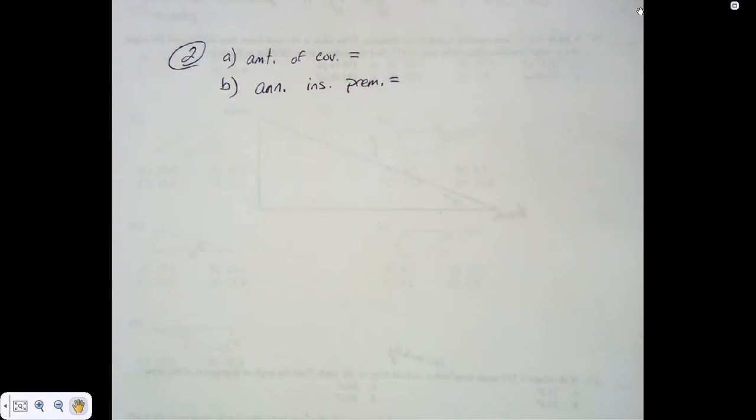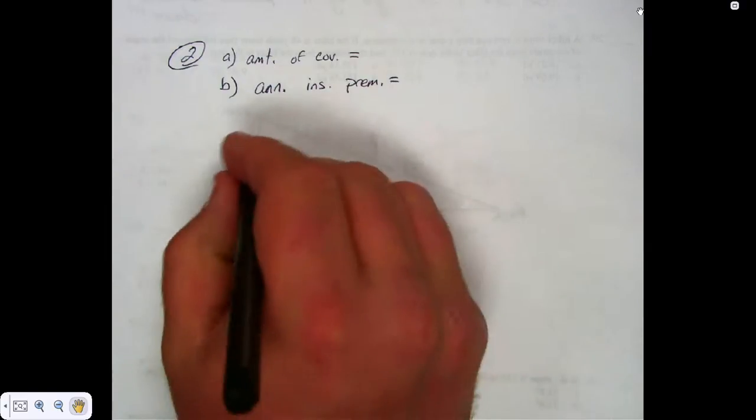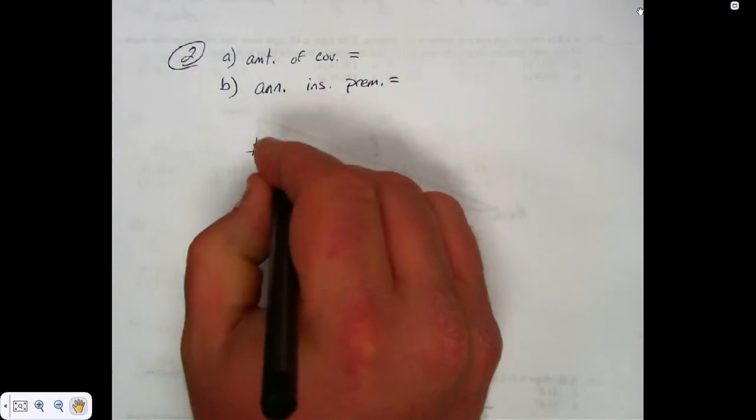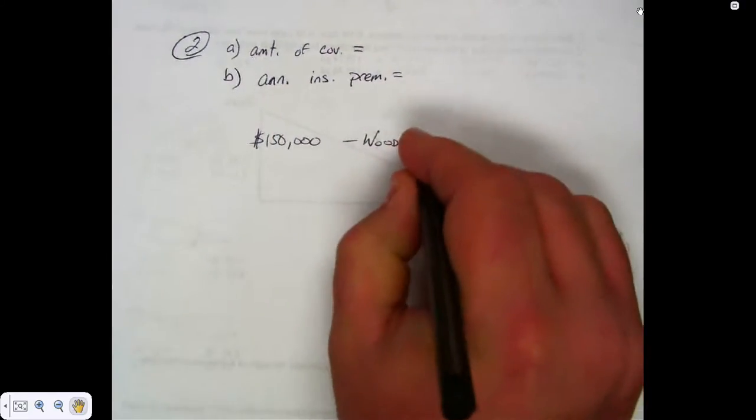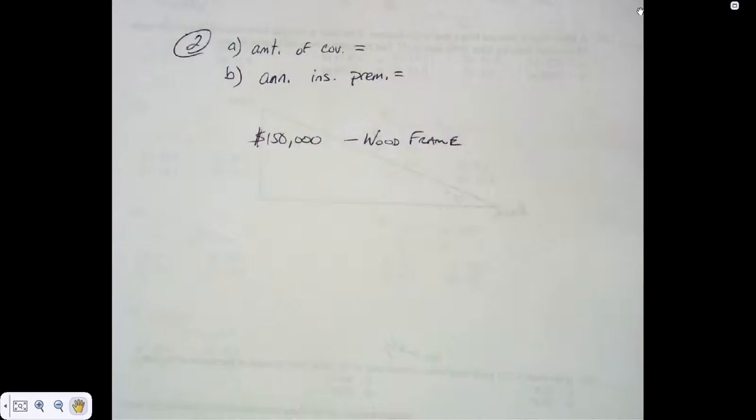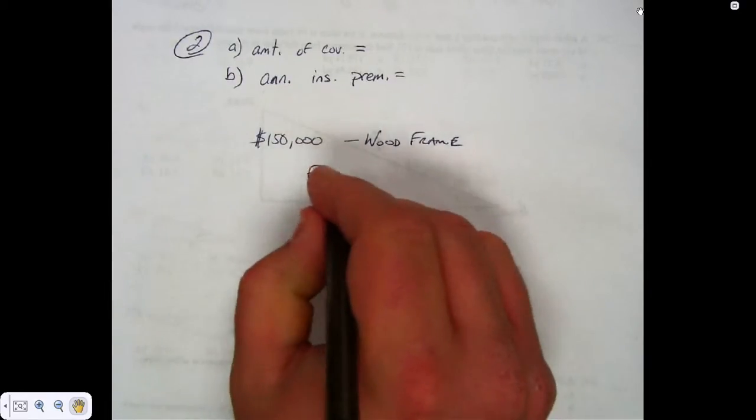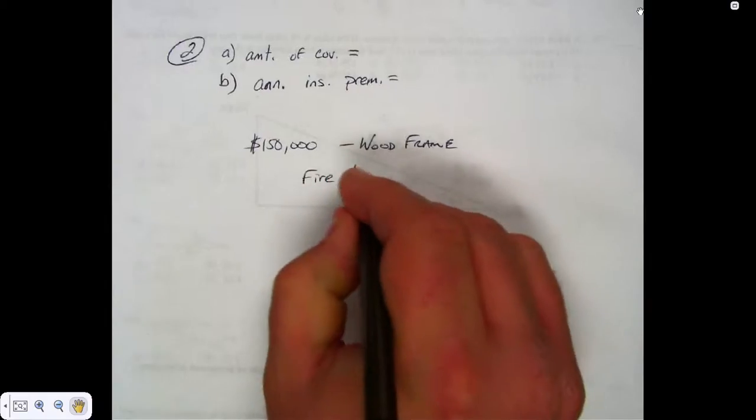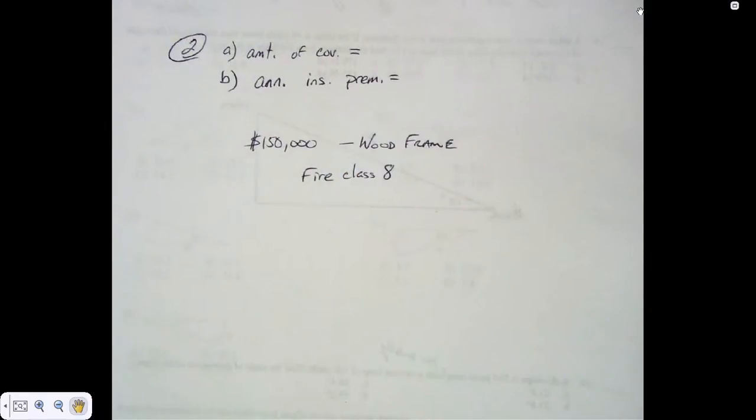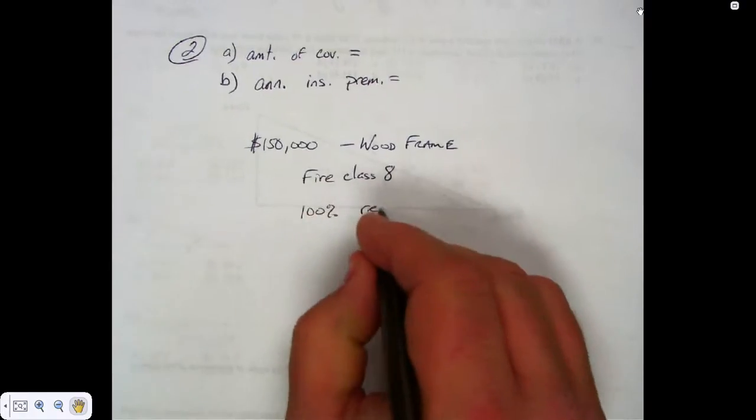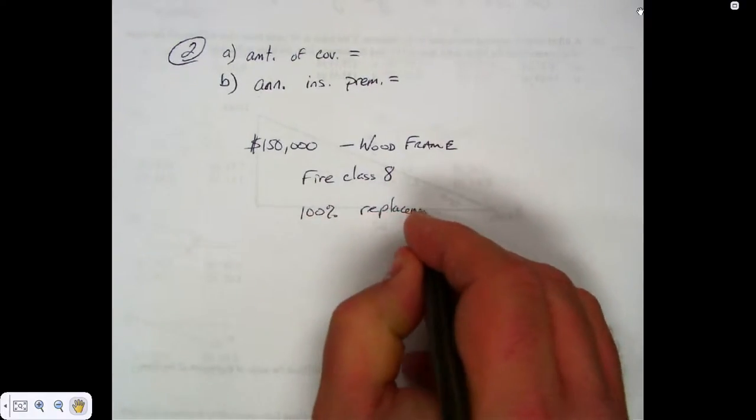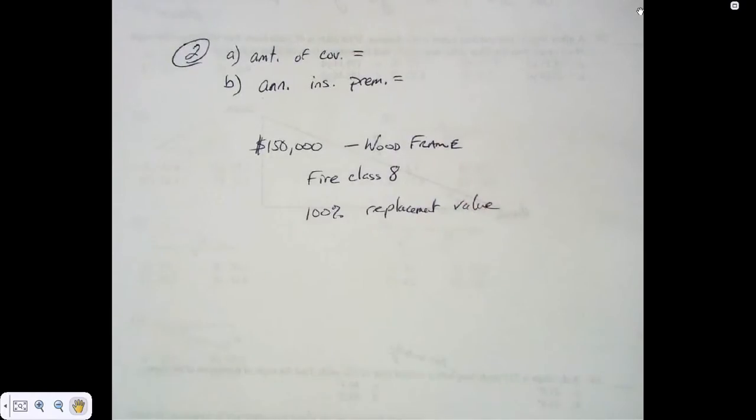Okay, we're going to use figure 10-6 on page 393. The Campbells own a $150,000 wood frame house. It is in fire protection class 8. They insured it for 100% replacement value.